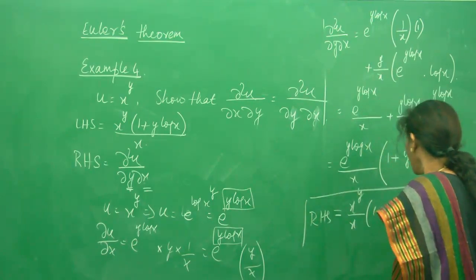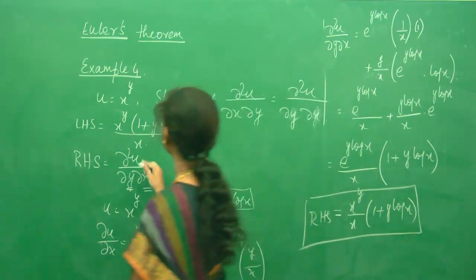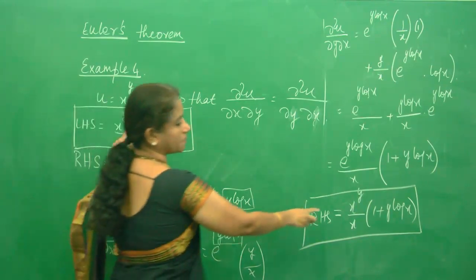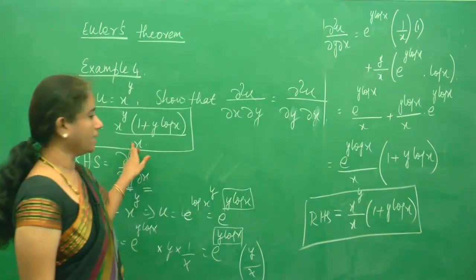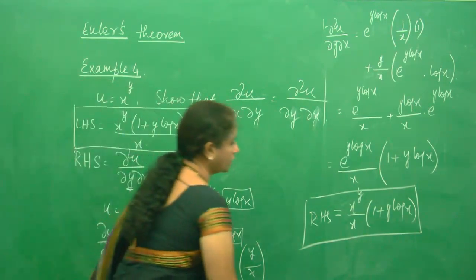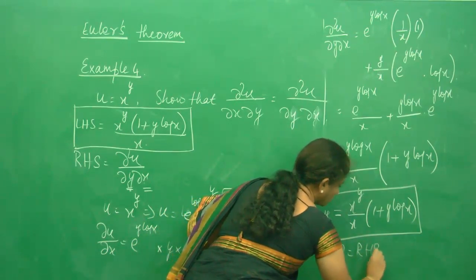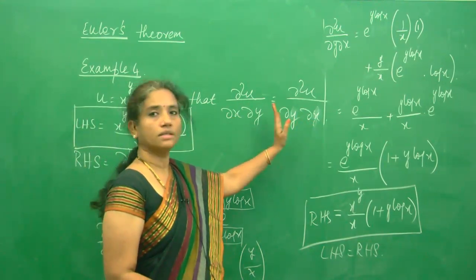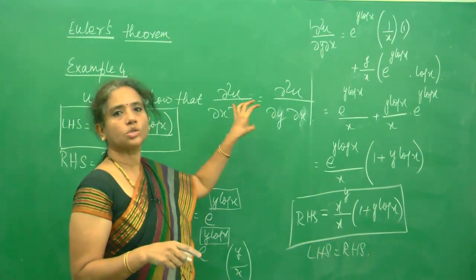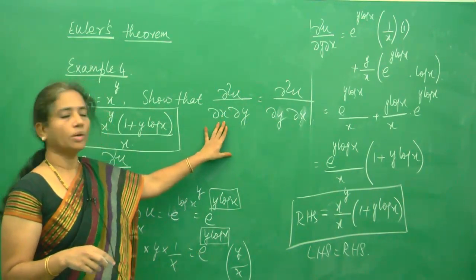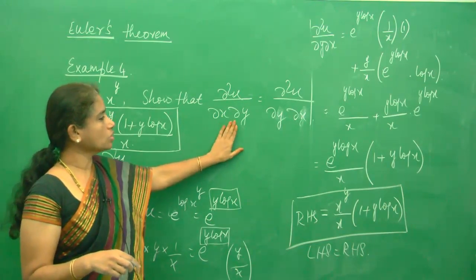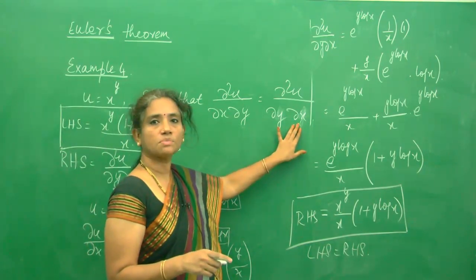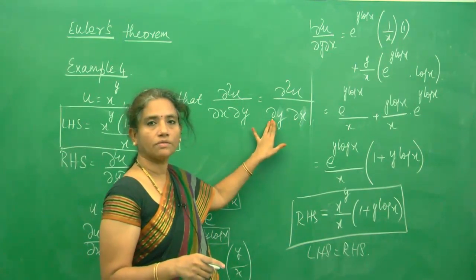Both LHS and RHS equal x^y · (1 + y log x) / x, so they are equal. Whether you differentiate with respect to y first then x, or x first then y, the result is the same for this question. Remember, this is not always true. Also remember: when ∂x∂y is written, differentiate with respect to y first then x; when ∂y∂x is written, differentiate with respect to x first then y.